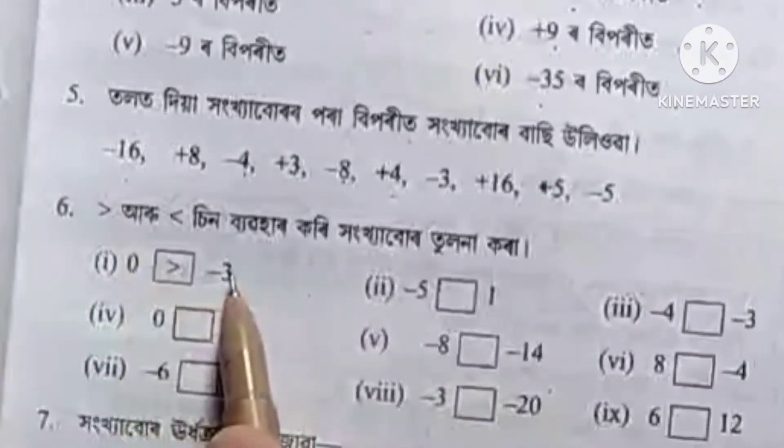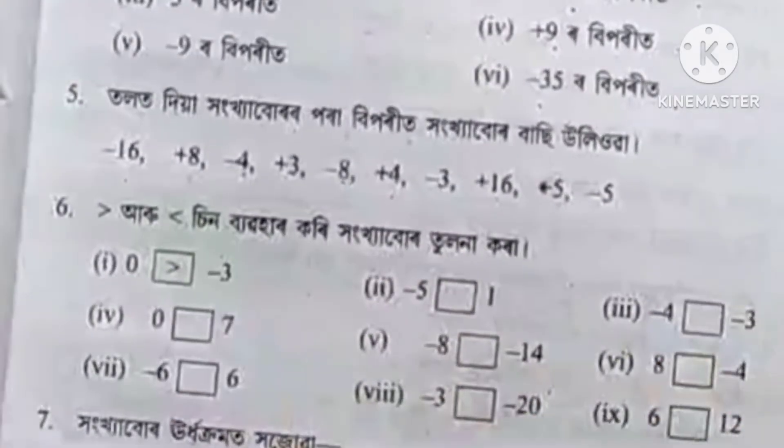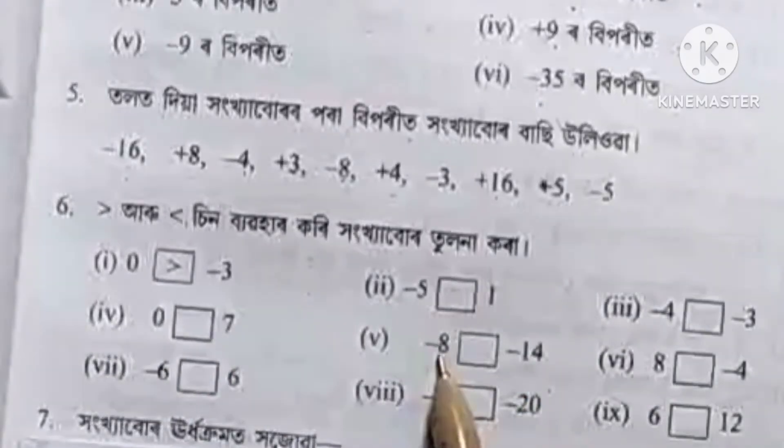Number 6: greater than, smaller than, smaller than 0. 2 minus 3, 0, 2 minus 3. 0, 2 greater than minus 3. Minus 5 to smaller than 1, 1 to 0, 2 smaller than. And minus 4, minus 4 to smaller. 7 to 0, minus 8 to 0, 8 to 0.